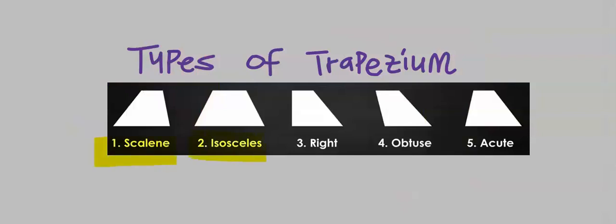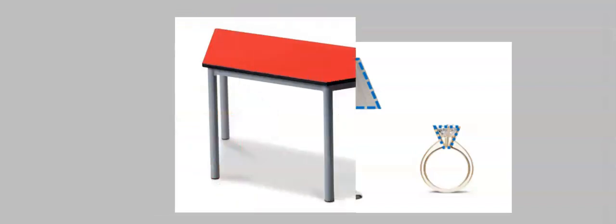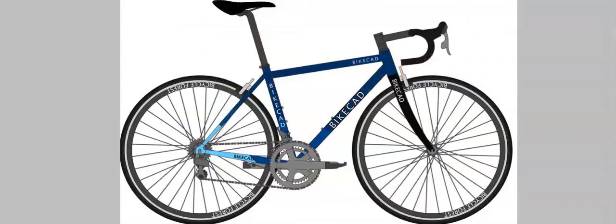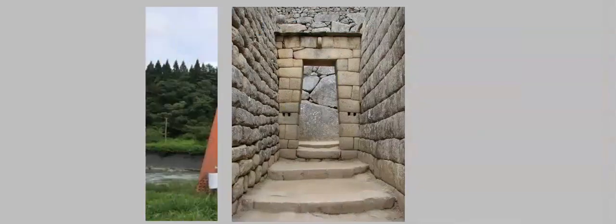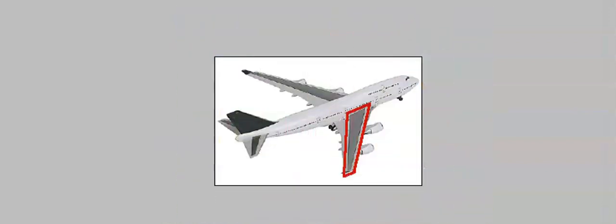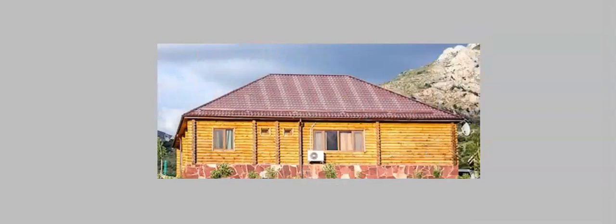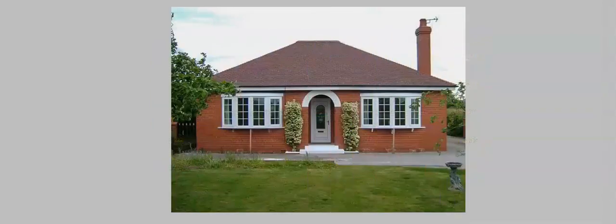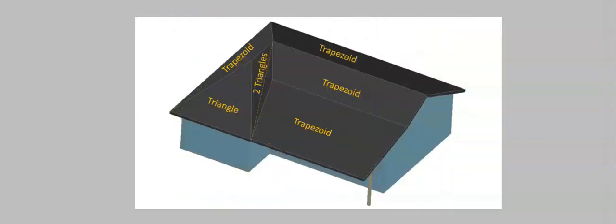Trapezoidal shapes can be evident around us in real life — like the shape of a table, some shapes on a bicycle, on windows, some doors and entrances, bridges, and even on the wings of an airplane. The roofs of many houses are trapezoidal, often combined with triangles.